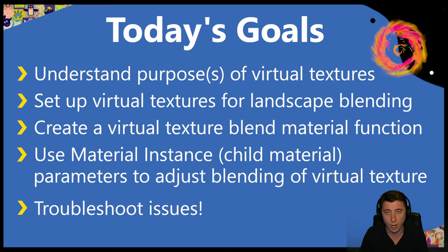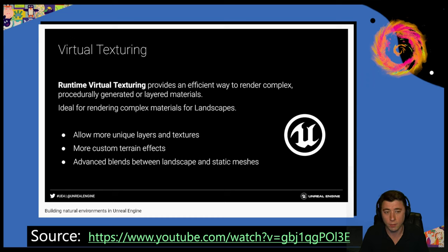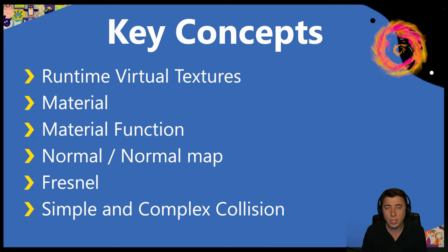There's a lot beyond this video that virtual texturing can accomplish - for example, making our landscape appear damp near a river. A good place to start is a video Unreal Engine put out, linked below. I also want to give a big shout out to Unreal Sensei, whose video on virtual textures is also linked in the description - his tutorial is really the backbone of this video. Here are the key concepts: fresnel, related to an issue with our landscape we'll fix today, and collision simple and complex.